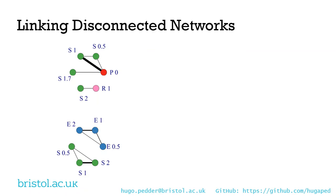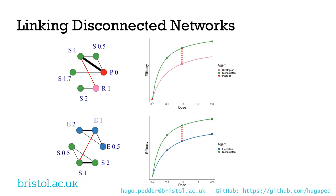Recent work has also shown that MBNMA-DOSE can be used to link disconnected networks. For example, if we're interested in comparing treatments indicated by the red dotted line in these two example networks, we wouldn't be able to do so in standard NMA because there's no pathway of head-to-head evidence between them. However, using MBNMA-DOSE, we model the dose-response curves for each of those agents, and from that we can estimate a relative effect between our treatments of interest. This can be really advantageous when you have a disconnected network with sufficient dose-response information. And because we're modeling on relative effects, we don't have problems adjusting for prognostic variables.